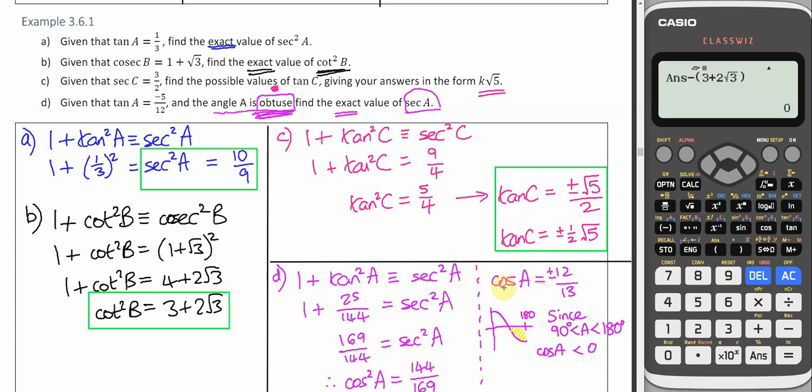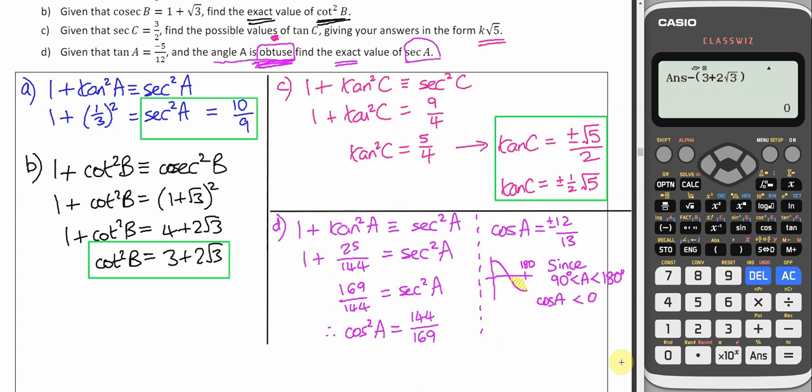If cos A is negative, then sec A will also be negative. So therefore, sec A will be negative 13 over 12. I've done the reciprocal again to get it back to sec.